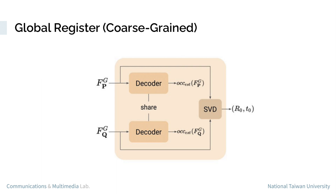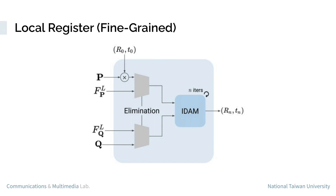Lastly, the local register takes the invariant features, then accurately refines the alignment results by matching the corresponding regions.